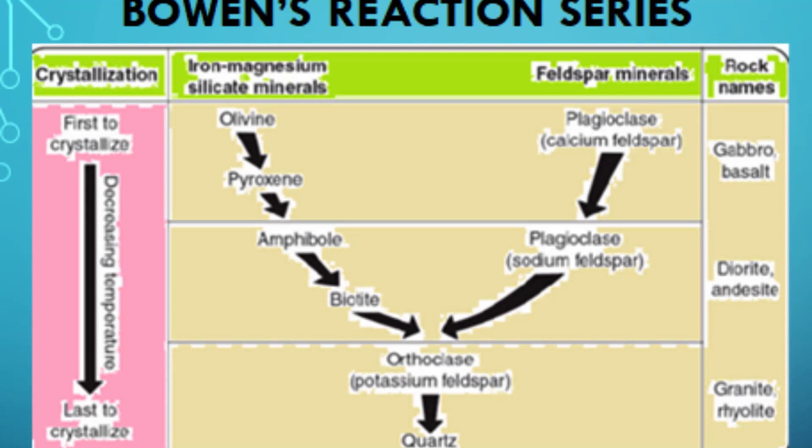The continuous series, on the other hand, includes minerals that crystallize out of the magma over a range of temperatures. Plagioclase feldspar is the first mineral in this series, forming at temperatures of around 1100 to 900 degrees Celsius. As the magma cools further, the plagioclase crystals change in composition, becoming more sodium-rich (albite) at lower temperatures and more calcium-rich (anorthite) at higher temperatures.